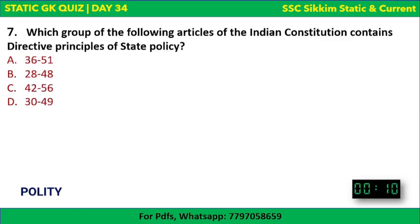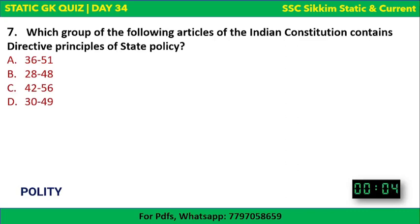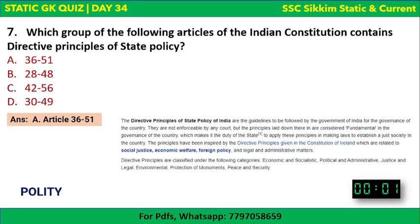Polity Question 2: Which group of articles of the Indian Constitution contains the Directive Principles of State Policy? The correct answer is Article 36 to 51. The Directive Principles of State Policy are guidelines to be followed by the government for governance of the country, but they are not enforceable by any court.